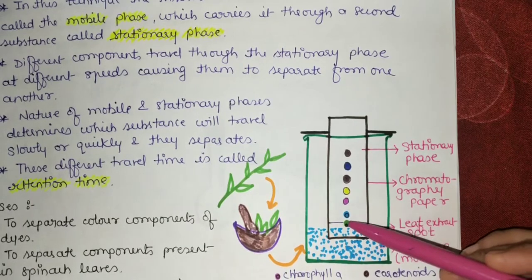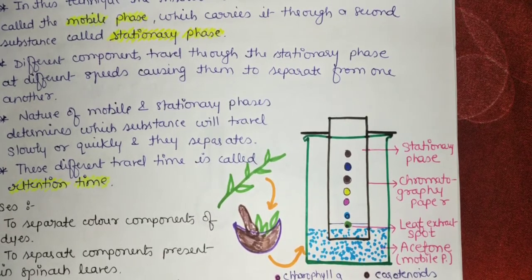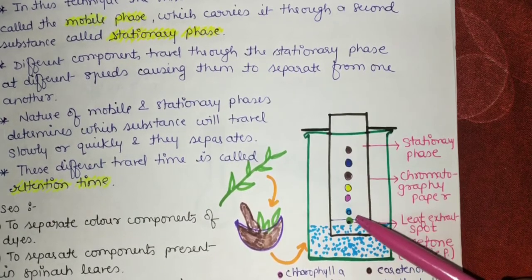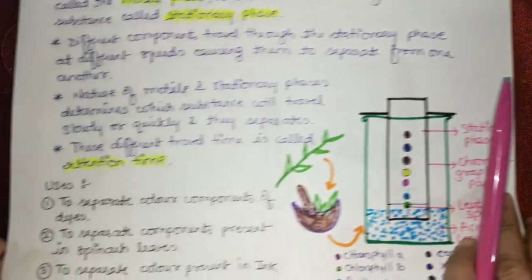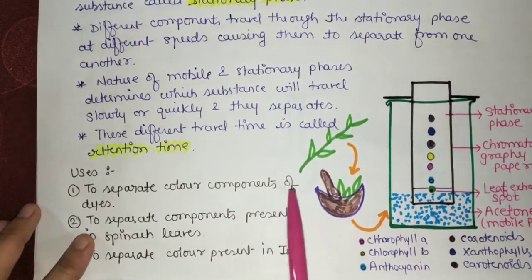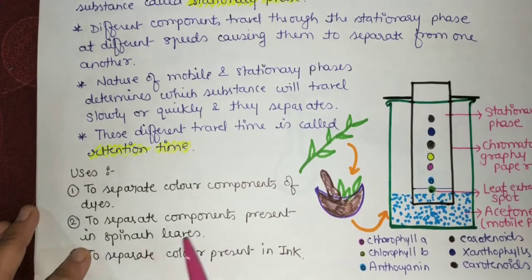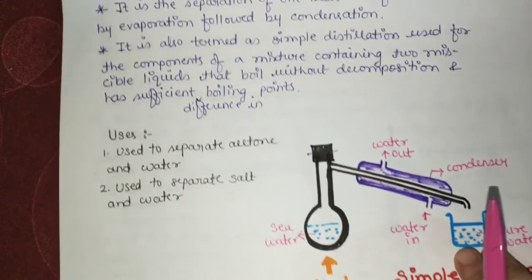From the spinach extract, we obtain separate spots for chlorophyll a, chlorophyll b, anthocyanins, carotenoids, and xanthophylls. This technique is used to separate colored components of dyes, colored components in spinach leaves, and colored components present in ink.